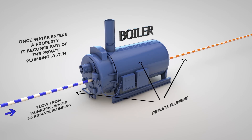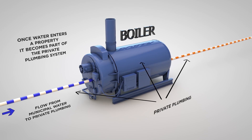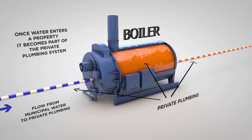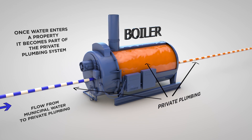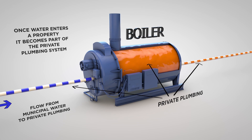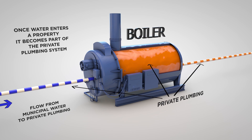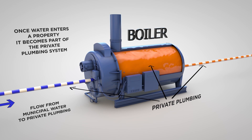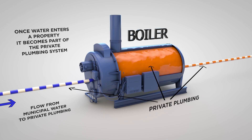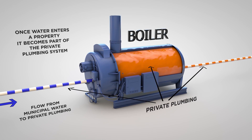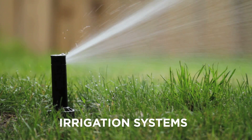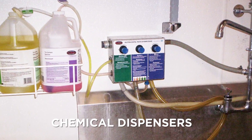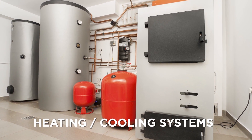A cross connection is a direct or indirect connection between the drinking water system and any other liquid, gas or other substances. In a direct cross connection, there is a physical connection between the drinking and non-drinking water system, such as an underground sprinkler system, chemical dispenser, or heating and cooling system.